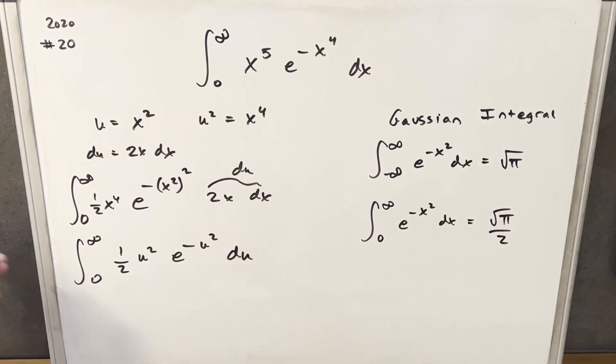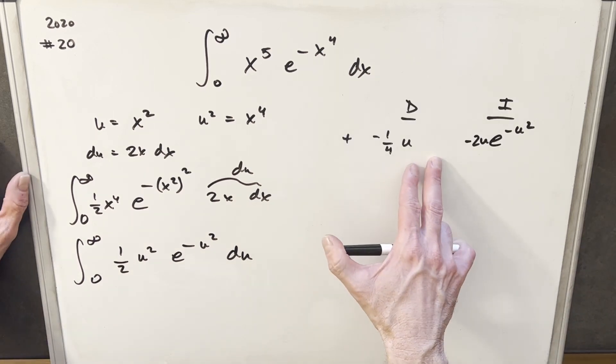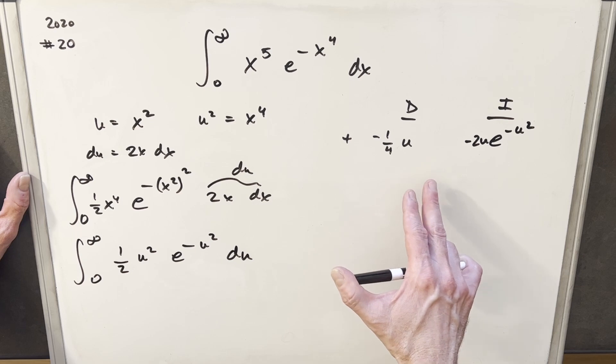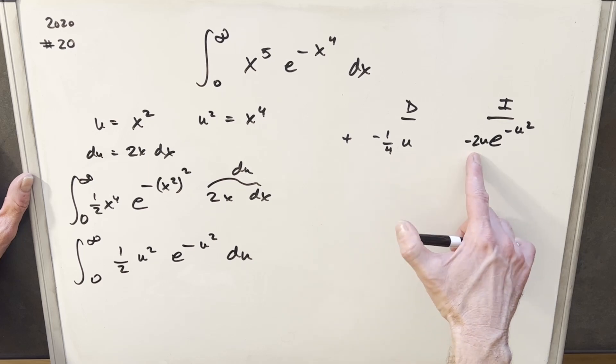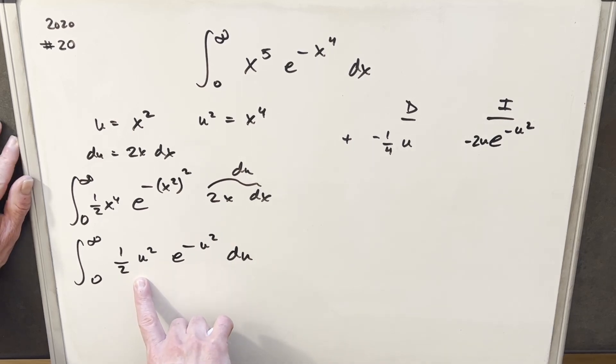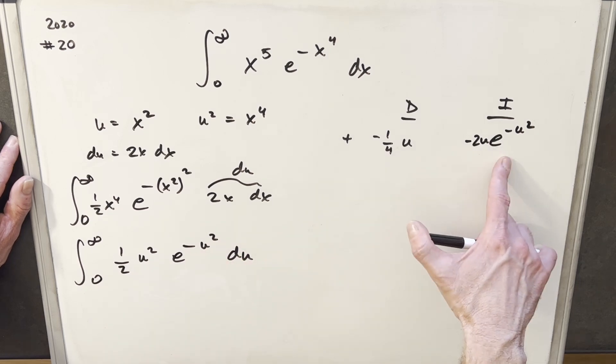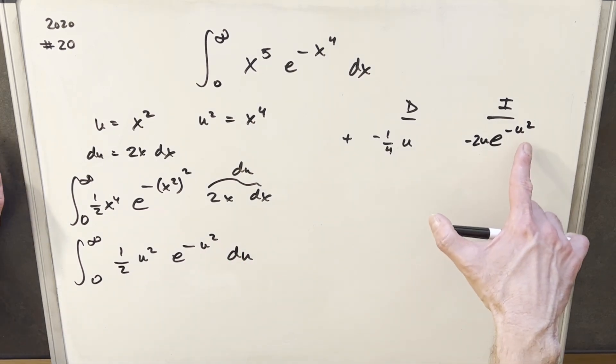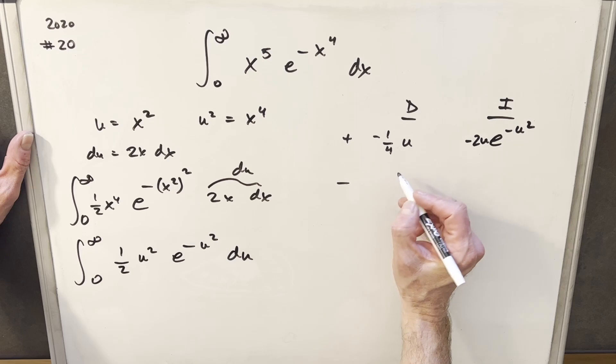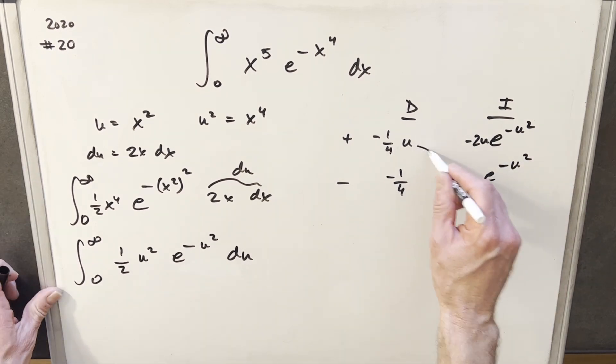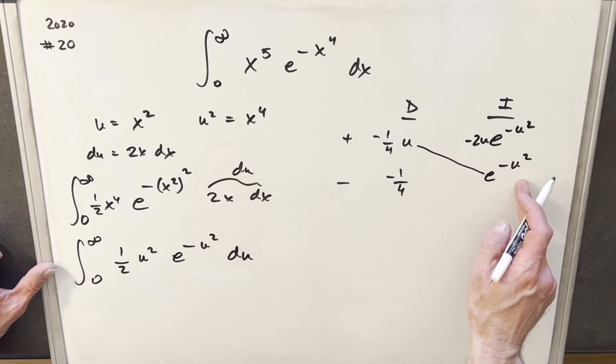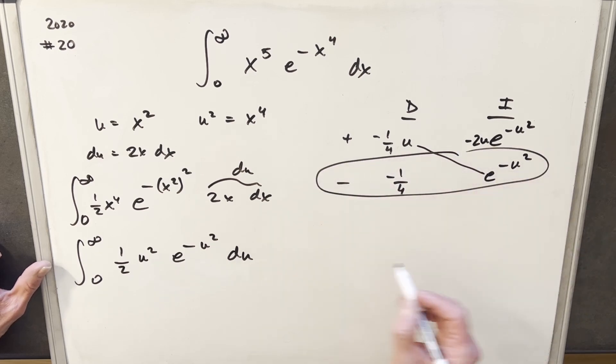Okay so I've set up my tabular integration table over here on the right. Now one thing I kind of skipped a step sorry about that. What I did was notice minus 1 fourth u times minus 2 u is equal to half u squared. So I split that up as I want this piece to help me integrate. So I specifically created the minus 2 u knowing that the derivative of minus u squared is minus 2 u. Okay so let's go through this so then we'll differentiate this and that's going to be minus 1 fourth here. The integral over here is going to be just e to the minus u squared and then from here this diagonal is going to be part of our solution and this row here this is going to be another integral.